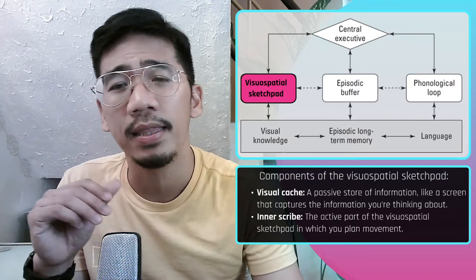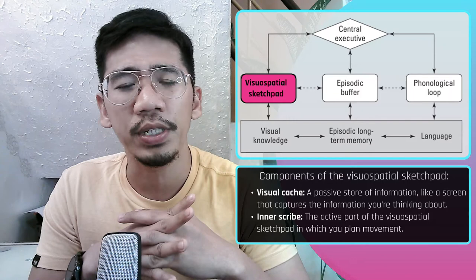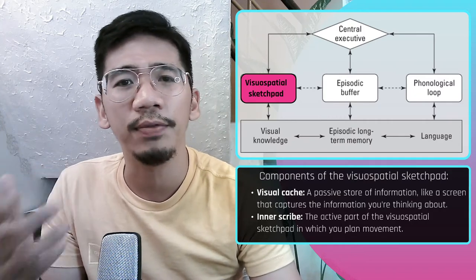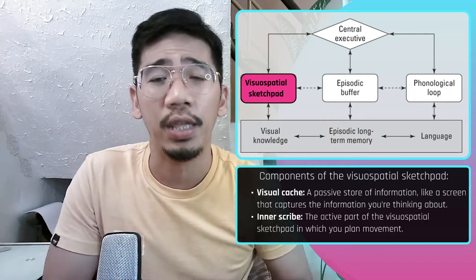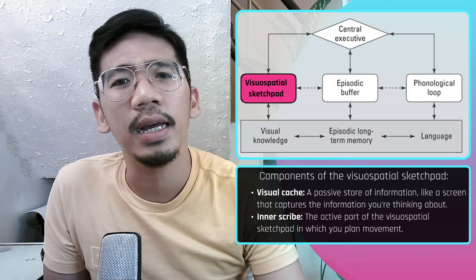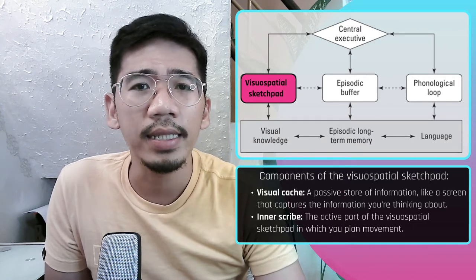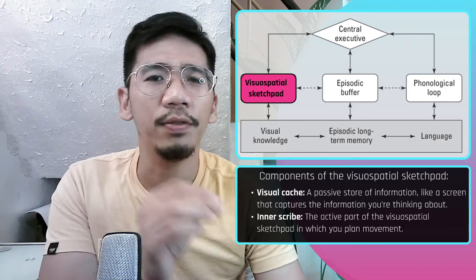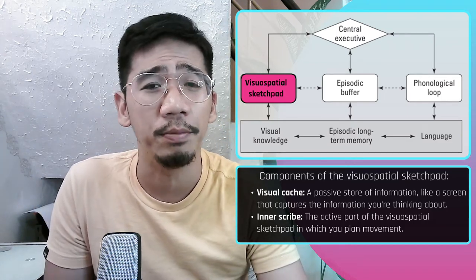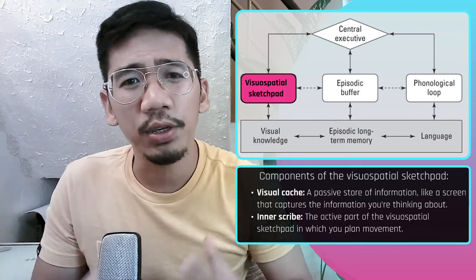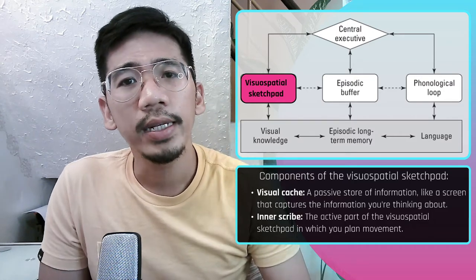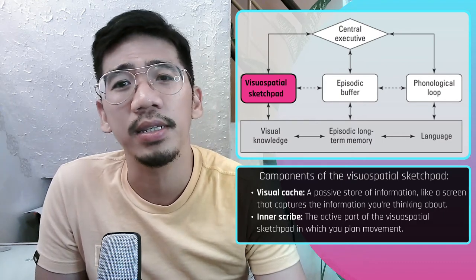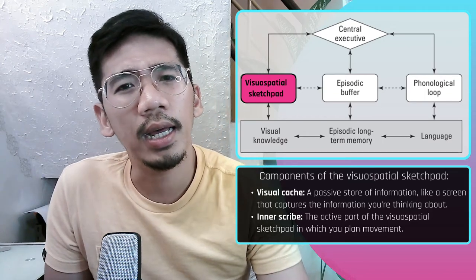Two components of the visuospatial sketchpad parallel those of the phonological loop. You have the visual cache — a passive store of information like a screen that captures what you're thinking about; when you're mentally imagining something, the image is stored in the visual cache like an artist's canvas. You also have the inner scribe, the active part of the visuospatial sketchpad in which you plan movements. It's primarily involved in the storage of spatial information and sequences of actions, and is the process by which images are drawn onto the visual cache.